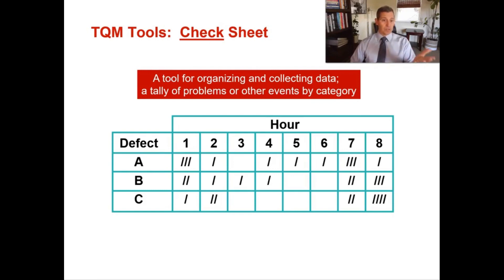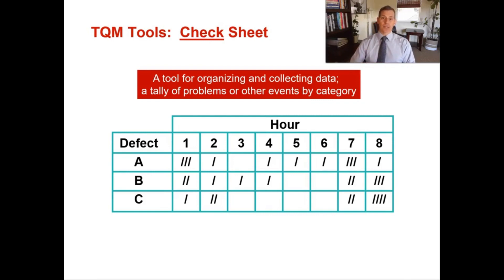Looking at this simple check sheet, you can see that most of the defects are with type A. You can also see that most defects — whether type A, B, or C — occur in the first hour or the seventh or eighth hour. Very easy to see that, and it tells you where to start looking.